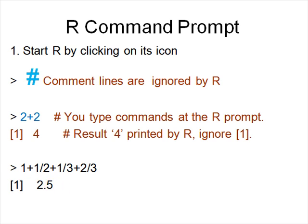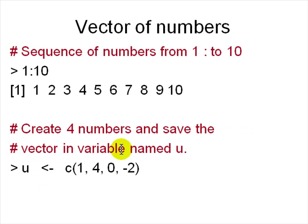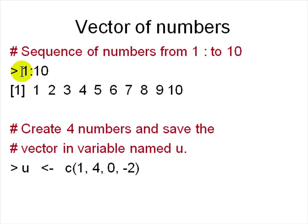Let's look at the other data types in R. A lot of things in R not found in other languages come from the concept of vectors and sequences, which are heavily built in. A sequence of numbers from 1 to 10 is written as '1:10'. If you type '1:10' it prints 1 through 10.